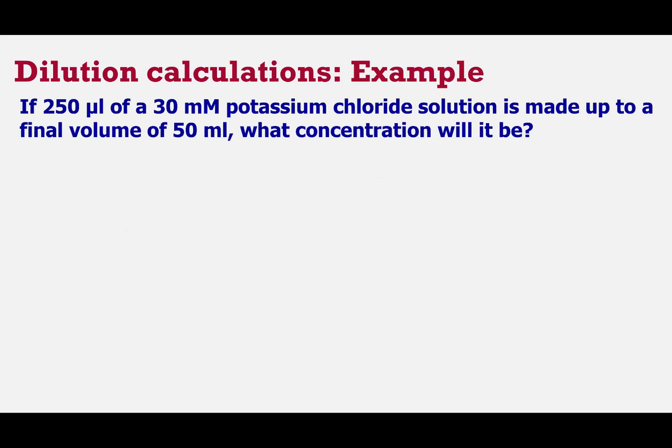So let's look at an example. If we had 250 microliters of a 30 millimolar potassium chloride solution and that was made up to a final volume of 50 milliliters, what concentration would it be? Now I would start out by writing down the standard equation that we're thinking about. I wouldn't write down routinely that full version each time, but I would literally write down V_i times C_i equals V_f times C_f every time I did a calculation of this sort.